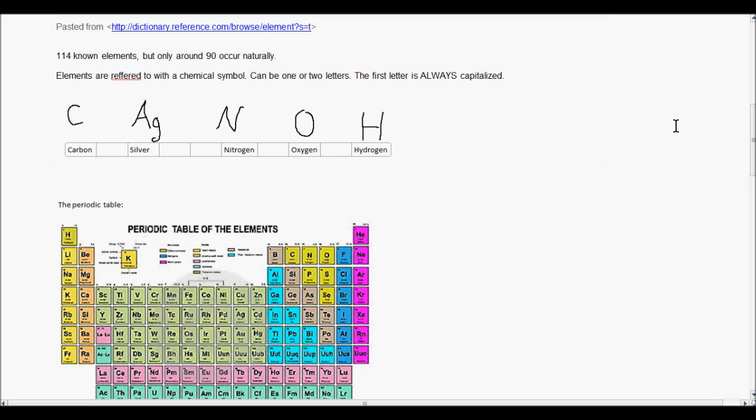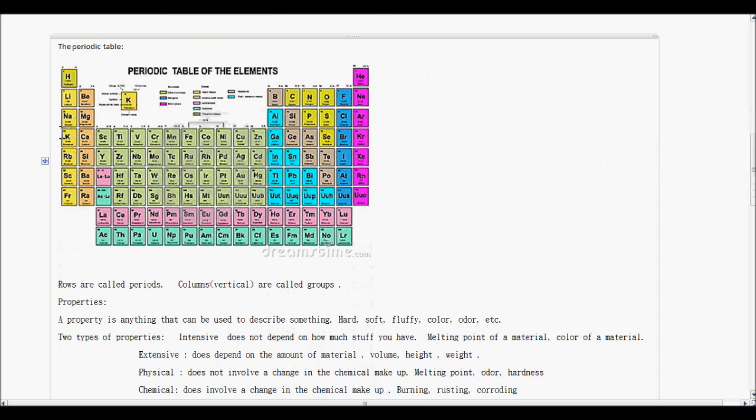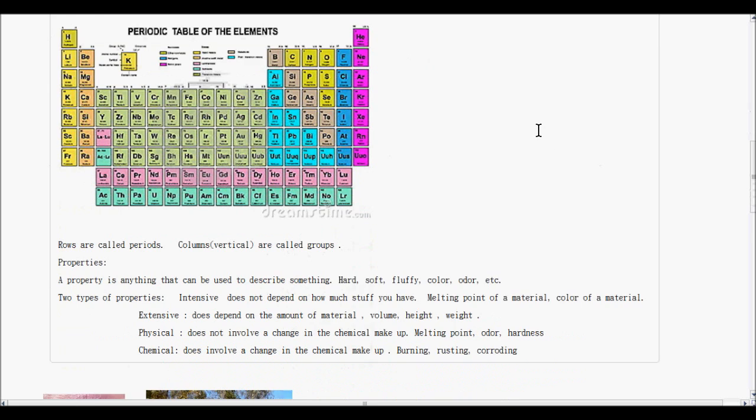And I'll save the periodic table for a whole separate video, because that needs its whole separate video. But for what you need to know from a Chem 1 standpoint is that the rows are called periods, and that's these rows going straight across, and that the columns are called groups. So you've got periods going across and columns going up and down. The columns are called groups.